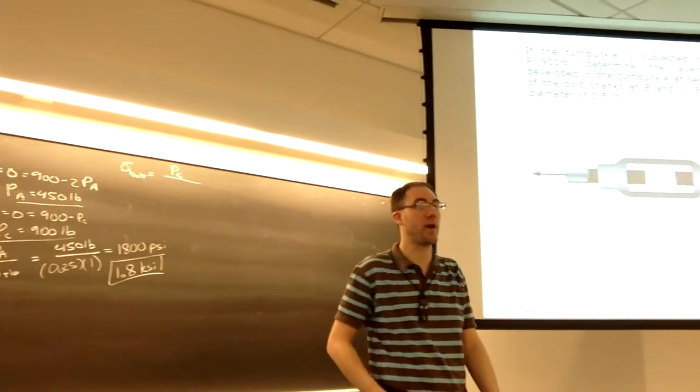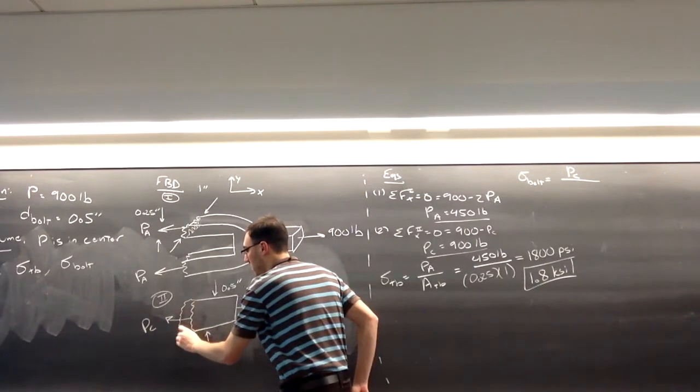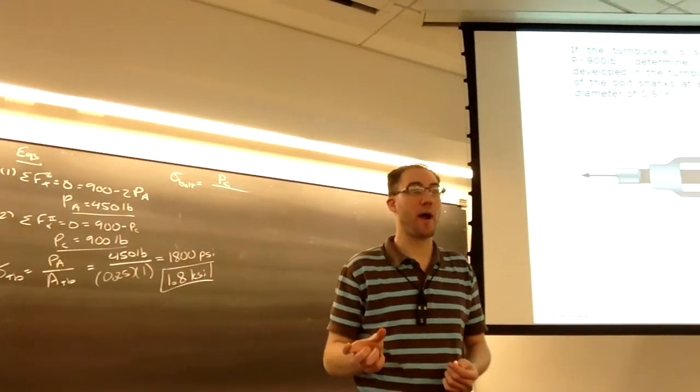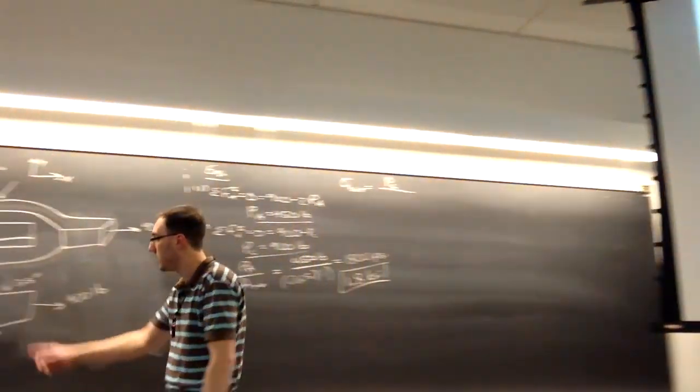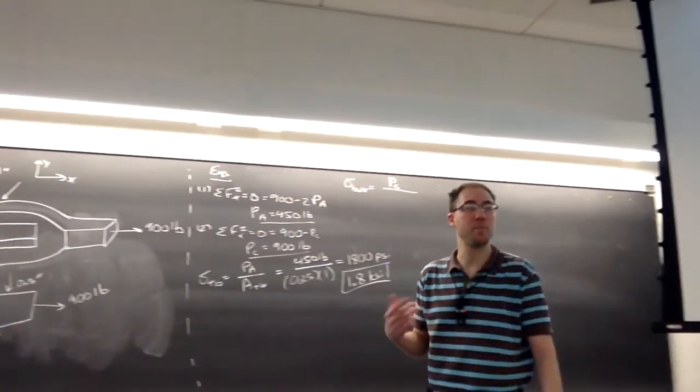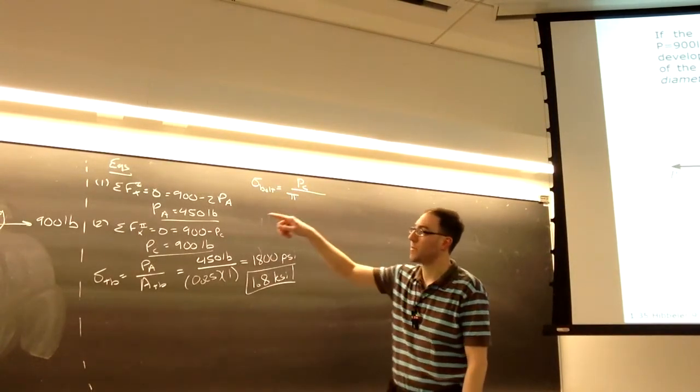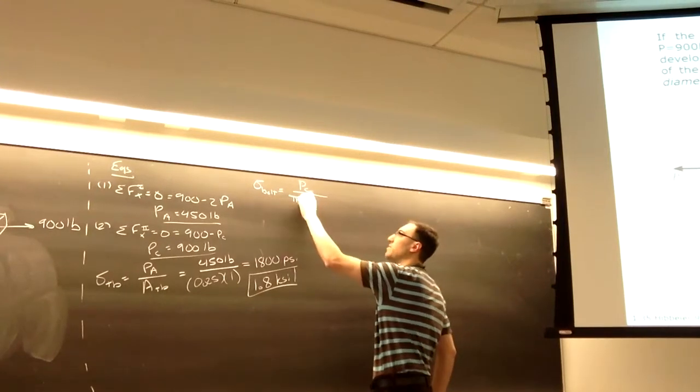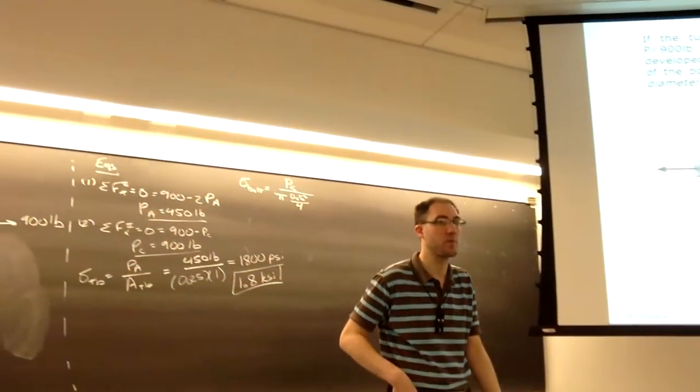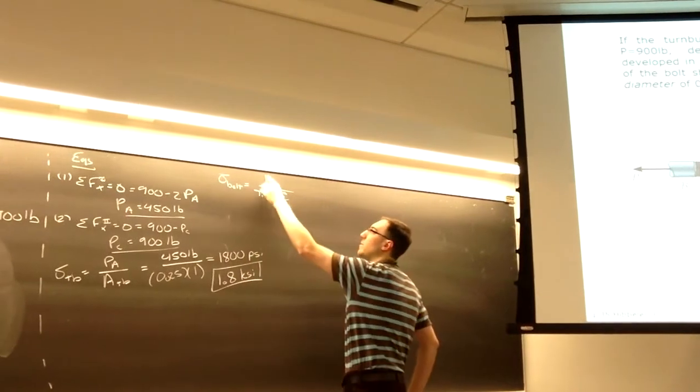Right, we can use pi r squared, because that's the area of a circle, which is what the cross-section is, a circular cross-section. Or, since we're given the diameter, we can use pi d squared over 4. Either way, we're going to get the same result. So the area is going to be pi times 0.5 squared over 4, which is the same as pi times 0.25 squared. And we know that Pc, we found, was 900 pounds.